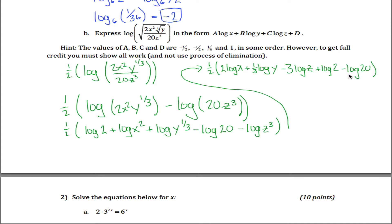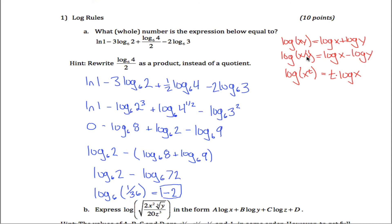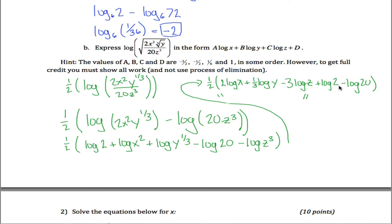The last two terms are log 2 minus log 20. Using the second log rule, that's the log of 2 divided by 20. But 2 divided by 20 is one-tenth, and the log of one-tenth asks to what power do you raise 10 to make it one-tenth — the answer is negative 1. So we get all this stuff with a minus 1 at the end. Log of 2 divided by 20 is negative 1.